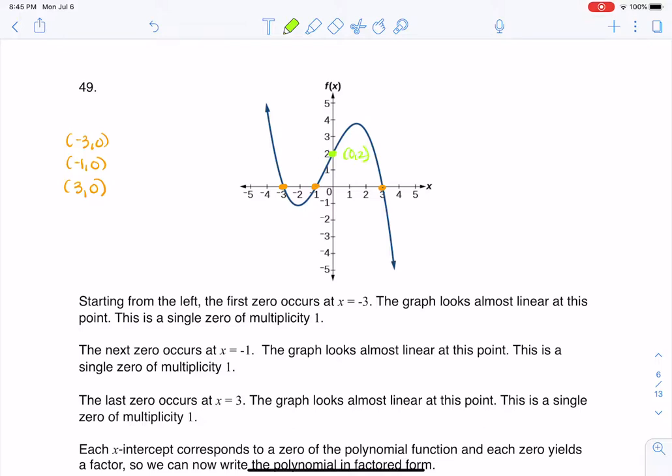So based on these 3 x-intercepts, I can start to fashion my function. What that means is I always have this stretch factor of a, and we'll get to that in a moment. But because I have an x-intercept at negative 3, 0, I know x plus 3 was a factor, and similarly x plus 1 is a factor, because I have an x-intercept at negative 1, 0, and then I have x minus 3.